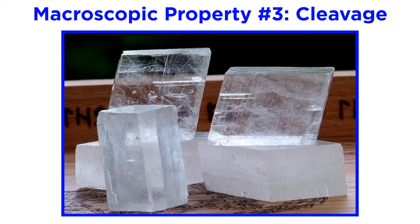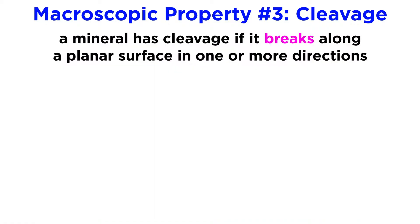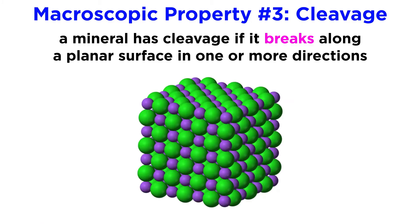One of the best ways to identify minerals is by examining their cleavage, or lack thereof. A mineral is said to have cleavage if it breaks along a planar surface in one or more directions. The way that a mineral breaks is fundamentally controlled by its crystalline structure, and more specifically its relative strength along different crystallographic directions.